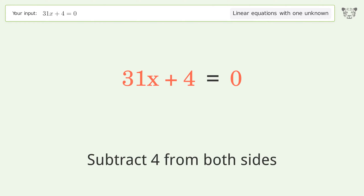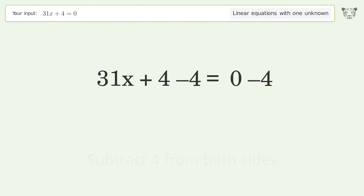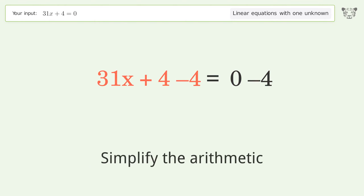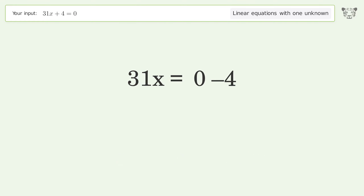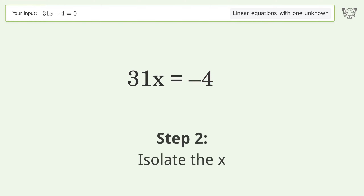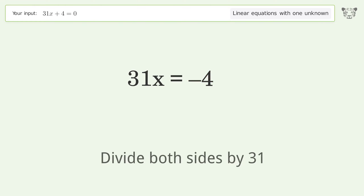Simplify the arithmetic. Then isolate x by dividing both sides by 31.